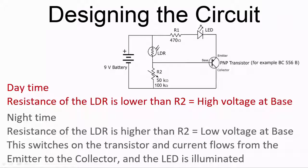Nighttime operation. When it's dark, the resistance of the LDR is high, much higher than R2. This means that the voltage being supplied to the base of the transistor is more negative than that being supplied to the emitter.